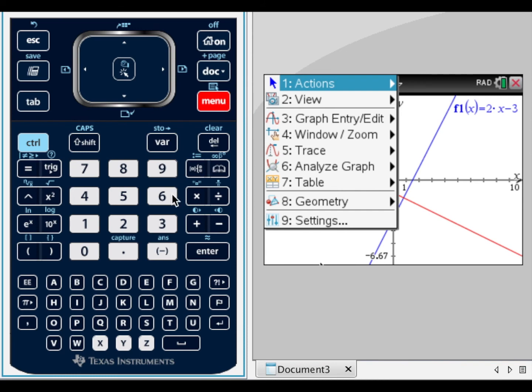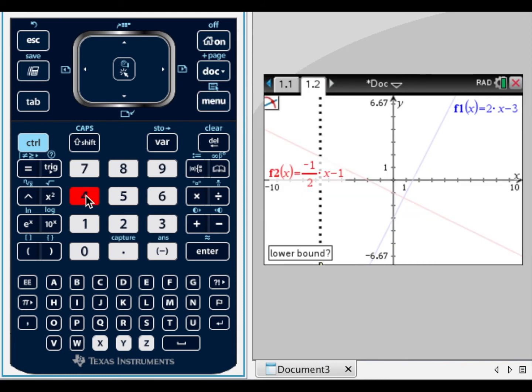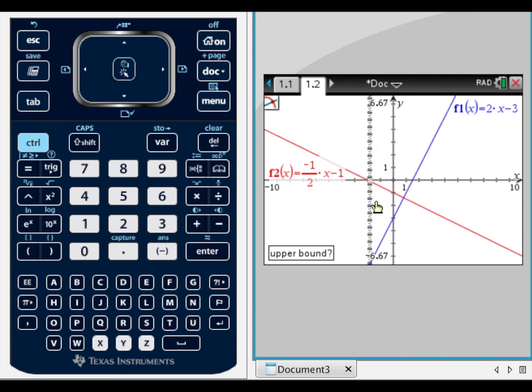Hit menu, analyze graph, intersection. Place the dotted line to the left of the intersection, enter, drag to the right of the intersection, and enter.